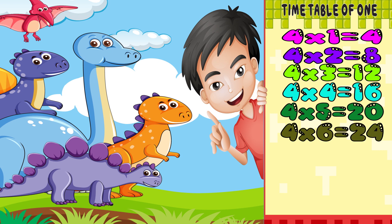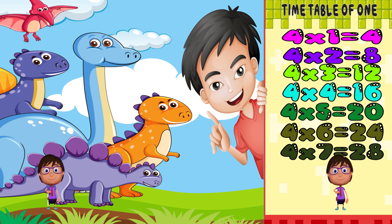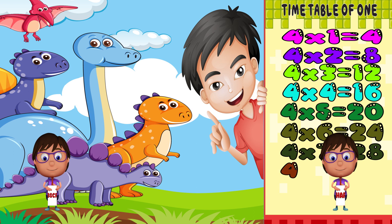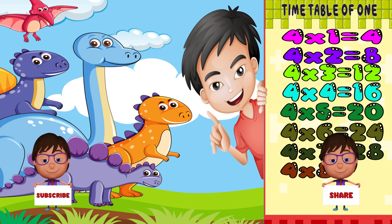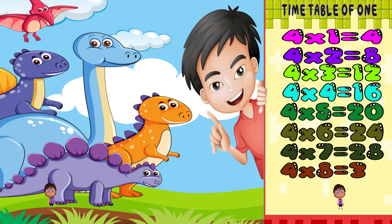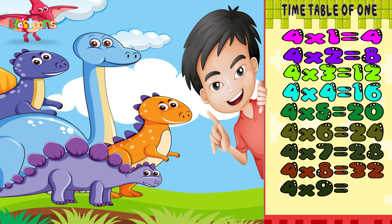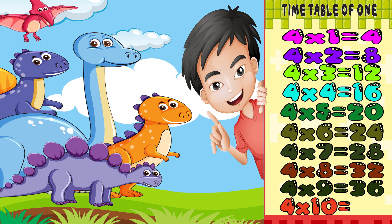4 times 6 is equal to 24. 4 times 7 is equal to 28. 4 times 8 is equal to 32. 4 times 9 is equal to 36. 4 times 10 is equal to 40.